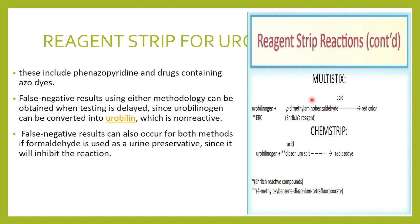False negative results can also occur pre-analytically. If you do not analyze the urine sample immediately, the urobilinogen can be converted to urobilin, which is non-reactive, giving a negative result. Similarly, if formaldehyde has been used to store the urine, you may also get a false negative result.